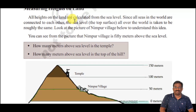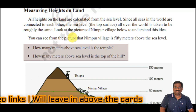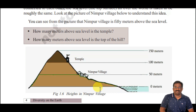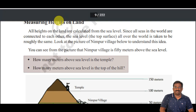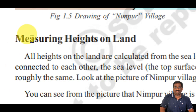Later we discussed about measuring heights on land. In this part we learned how to measure different heights in various physical features. For example, if you want to measure the height of a mountain, we have to measure from the mean sea level — that is, from where the water base is.